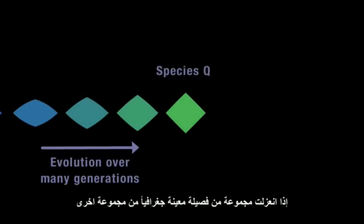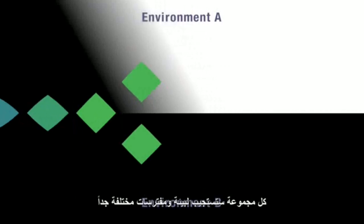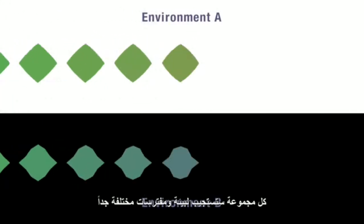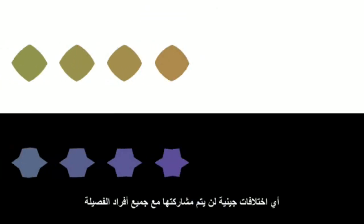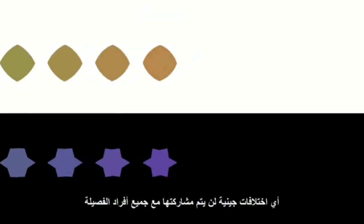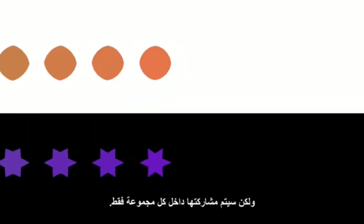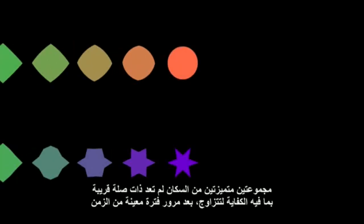If members of a given species become geographically isolated from each other, each group may end up having to respond to very different environments and predators, and adapt to very different ways of gathering food. Any genetic variations will no longer be shared throughout the whole population but only within each group. In this way, genetic drift and natural selection can lead to the emergence of two distinct populations, which after a given period of time are no longer related closely enough to interbreed.